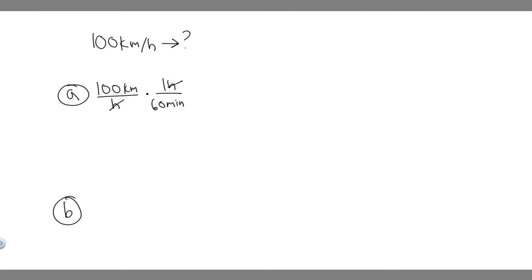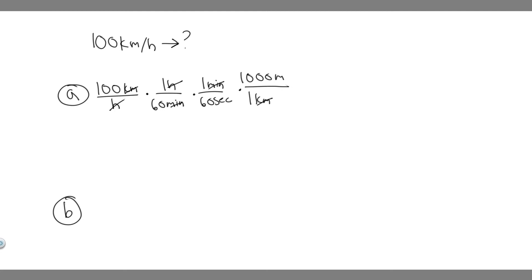But we want it in seconds, not minutes. So we're going to convert from minutes into seconds. We know that there's one minute for every 60 seconds. So now we have kilometers per second. But we want it in meters per second, so we need to convert from kilometers to meters. We know one kilometer is the same as 1,000 meters. That's going to cancel the kilometers, and now we have meters over seconds, which is exactly what we want.